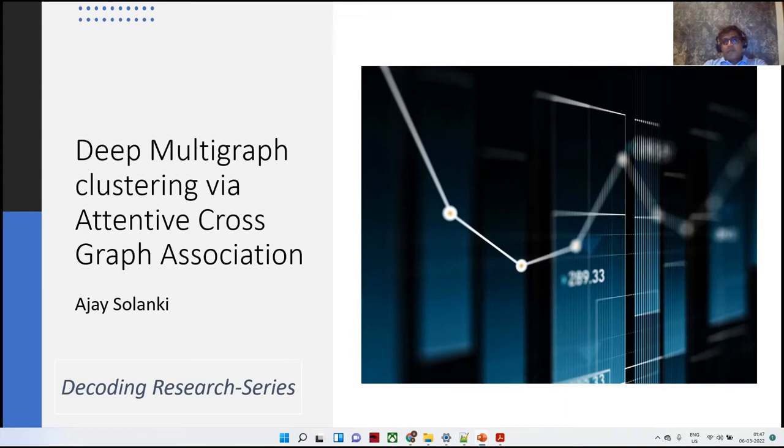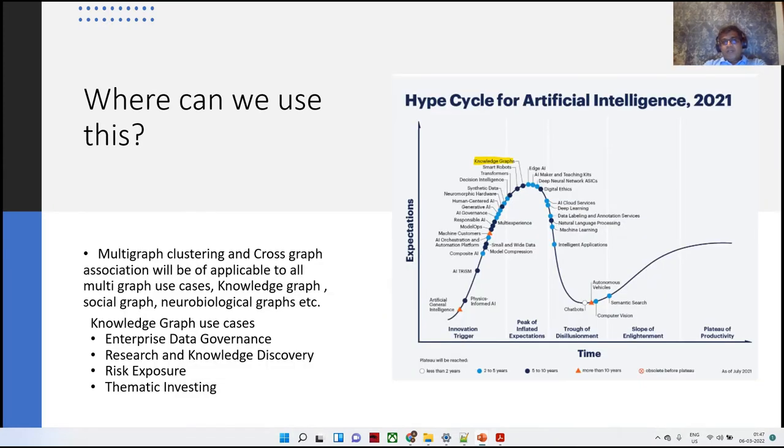Thank you for attending my session on Deep Multigraph Clustering by Attentive Crossgraph Association. This is one of the many decoding research series videos that I'm doing. Before I get into the research paper, I'd like to take a minute and talk about where we can use this. Multigraph clustering and crossgraph association can generally be applicable to most multigraph use cases: knowledge graph, social graph, neurobiological graphs, etc.